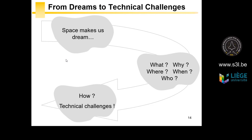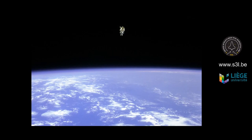Space has made us dream for centuries, and now we are able to put a lot of systems into space and change our life. To carry out this change, engineers handle a lot of technical challenges. For the next slides, I will answer these questions: What is a satellite? Why do we want to go into space? Where is it possible to put a system into space? When did everything start? And who is involved in the space domain? I will finish with: How is it possible to manage the technical challenges?